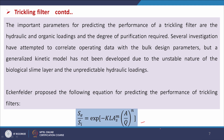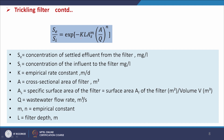Here we will see one empirical relationship proposed by Eckenfelder for predicting the performance of a trickling filter. The equation is: Se/Si = exp(−K × L × As^m × A/Q^n), where Se is the concentration of settled effluent from the filter, Si is the concentration of the influent to the filter, K is the empirical rate constant in meters per day, A is the cross-sectional area of the filter, and As is the specific surface area of the filter (surface area divided by volume).